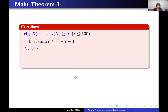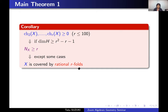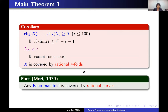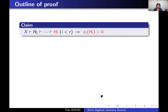Before explaining the proof, I mention its application. This invariant Nx is related to the dimension of rational subvarieties containing X. The conclusion of the main theorem implies that X is covered by rational subvarieties of dimension R, except in some cases. This theorem says that the positivity of the Chern characters of X, with some additional assumptions, implies that X is covered by higher-dimensional rational subvarieties. Thus, we can regard this theorem as a higher-dimensional version of Mori's result.